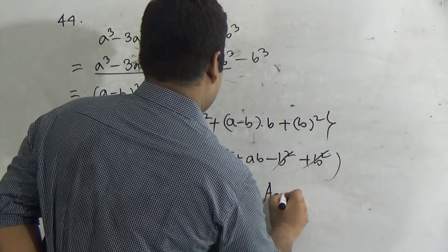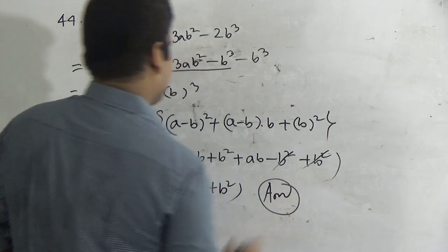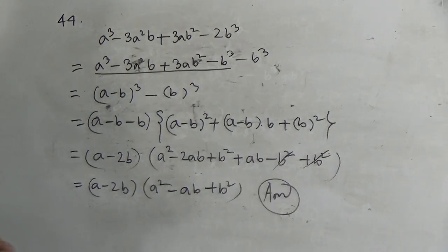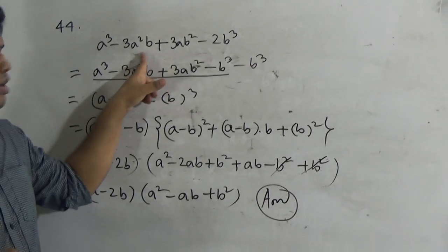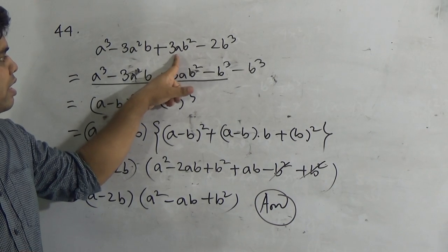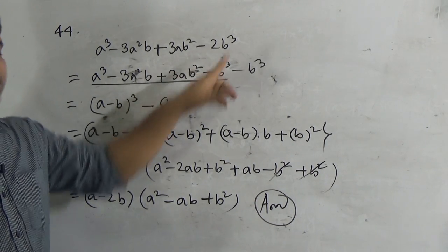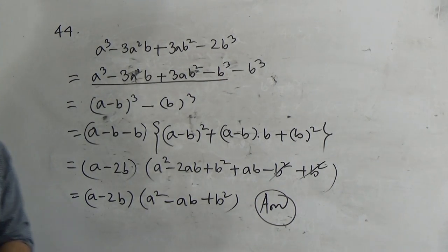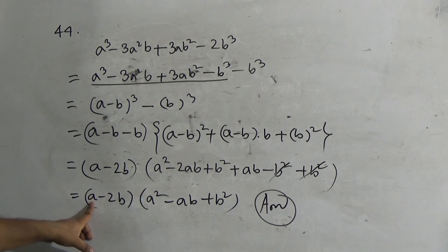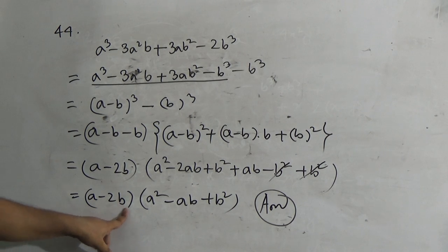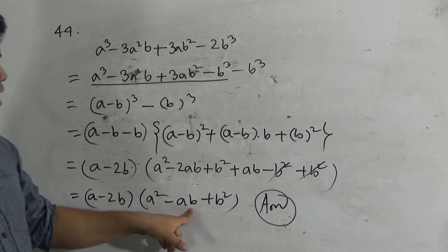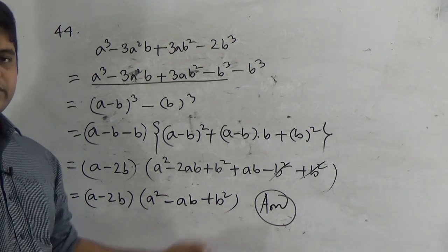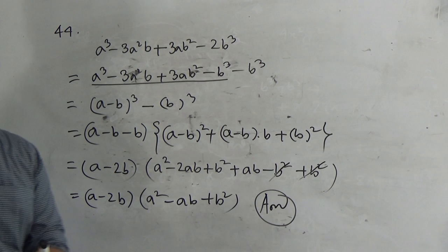So we are left with (a minus 2b) into (a² minus 2ab plus ab plus b²), which simplifies to (a minus 2b)(a² minus ab plus b²). That means if we resolve a³ minus 3a²b plus 3ab² minus 2b³, we get factors (a minus 2b)(a² minus ab + b²). I hope you have understood.